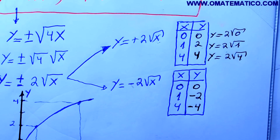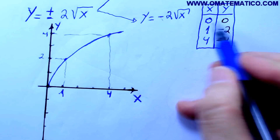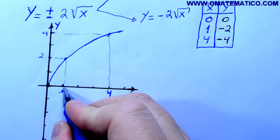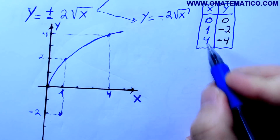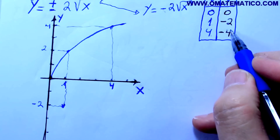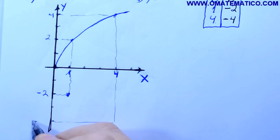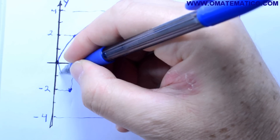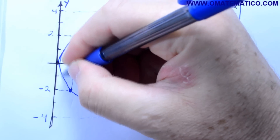Este gráfico ficaria assim: 0, 0 é o mesmo ponto. 1 com menos 2 fica aqui. E 4 e menos 4 fica aqui. O gráfico, o ramo dele seria assim — este é o ramo de baixo de y igual a menos 2 raiz de x.